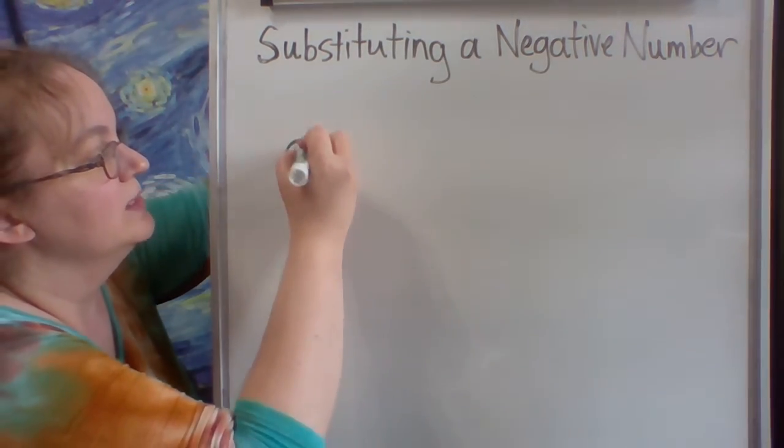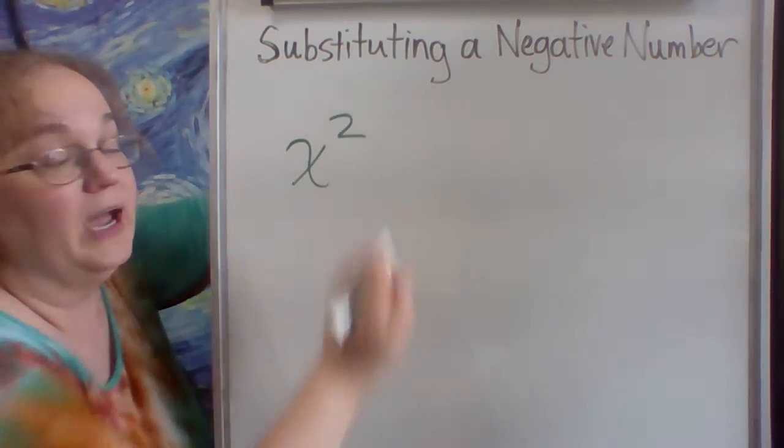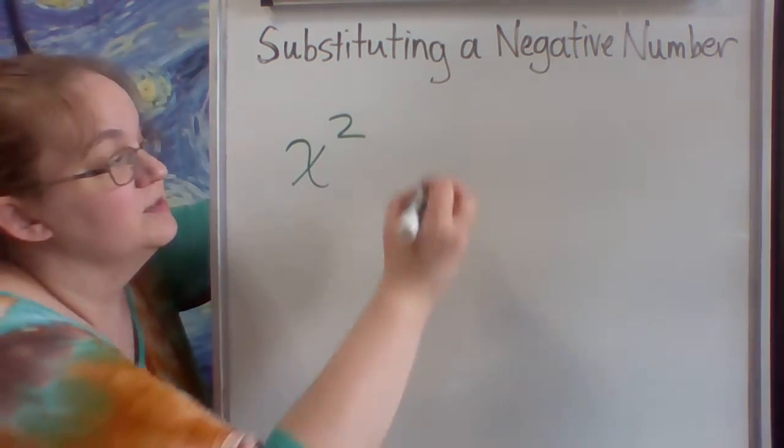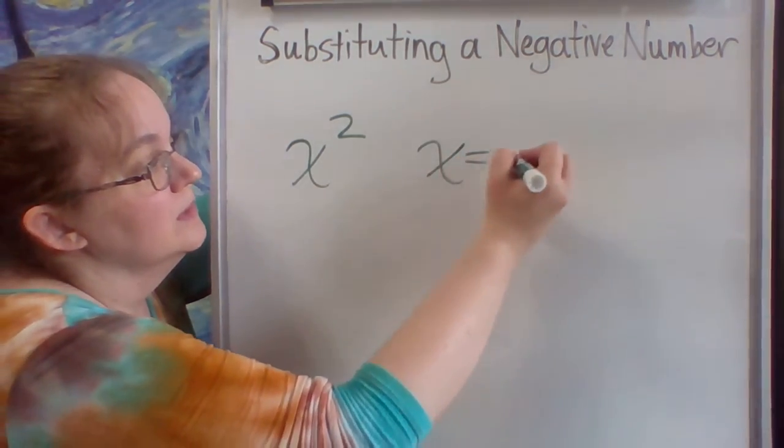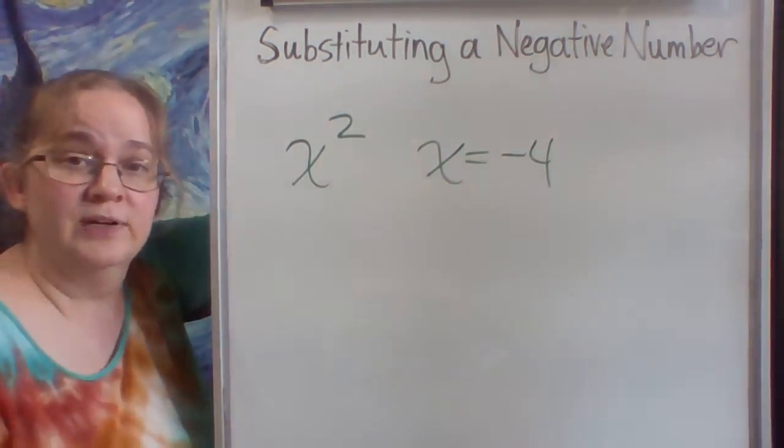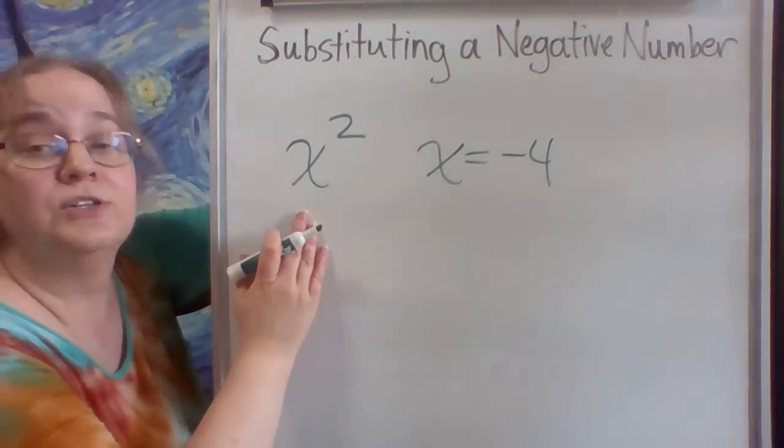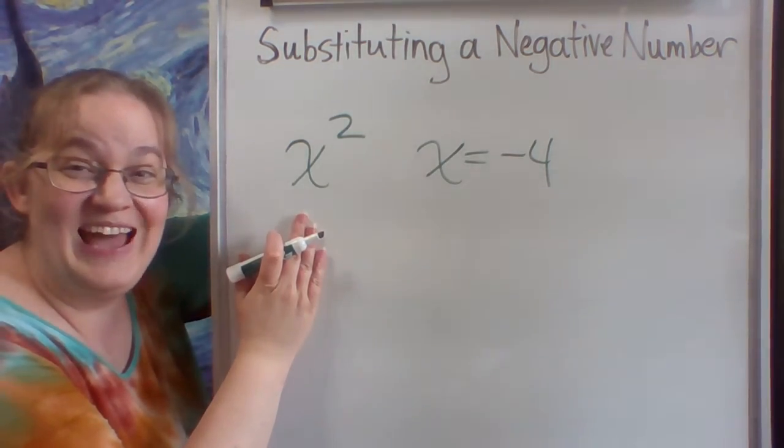Let's say I have something like x to the second power. And I want to substitute in negative 4. OK, well, what do I do? You substitute into parentheses. That's the rule.